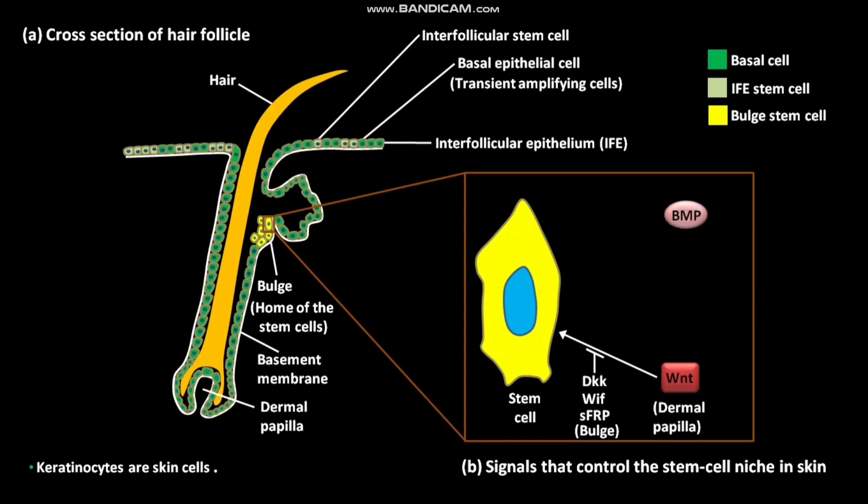BMP belongs to the TGF-beta family of signaling proteins. BMP is produced by mesenchymal cells, which are present adjacent to the bulge. BMP blocks the differentiation of stem cells in the bulge.